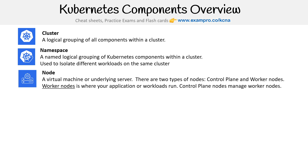Then you have nodes. A node is a virtual machine, or it could be a serverless container, because some providers like Google and AWS let you run it on their serverless container platform. Either way, it's just the underlying compute — the underlying server. There are two types of nodes: control plane nodes and worker nodes. Worker nodes are where your applications or workloads run, and the control plane node manages the worker nodes.